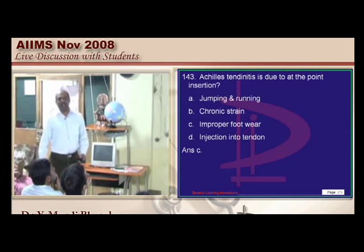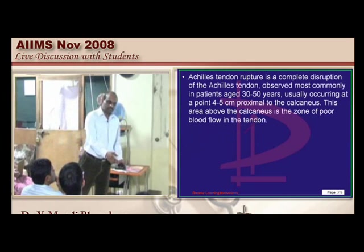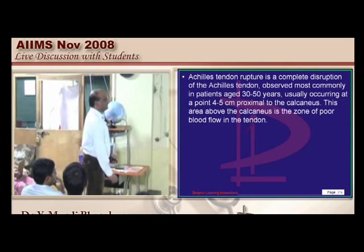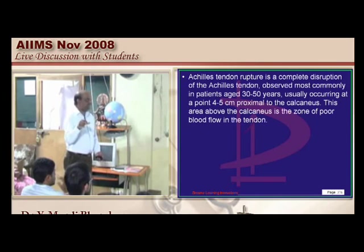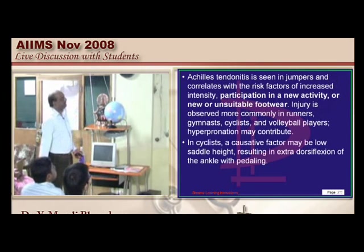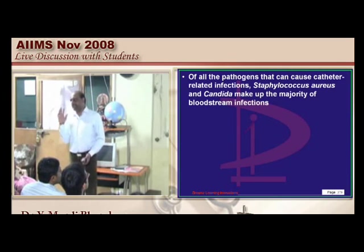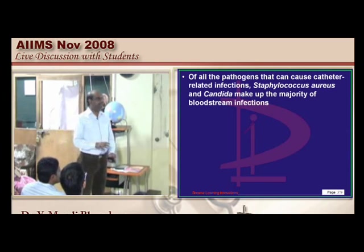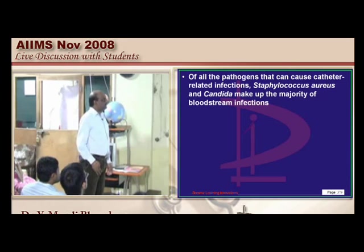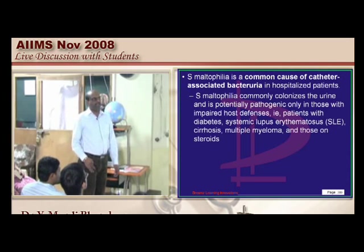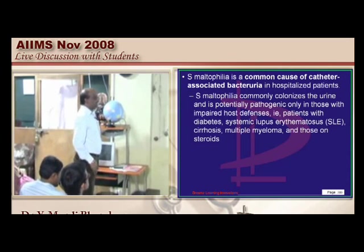Achilles tendonitis occurs when you purchase a high-heeled shoe — unsuitable footwear is the most common cause of pain at the Achilles tendon insertion area. Catheter-associated endocarditis is commonly right-sided and more often fungal. Stenotrophomonas maltophilia, otherwise called Pseudomonas maltophilia, is implicated in catheter-related endocarditis.